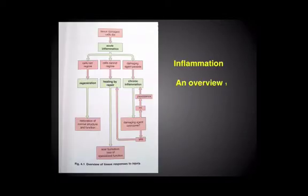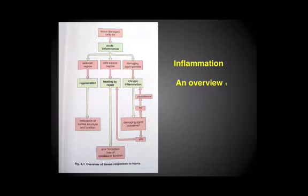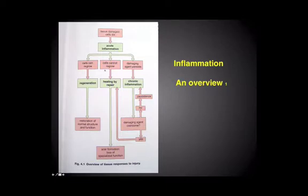This schematic shows, as a flow chart, some of the ways in which the inflammatory response can progress. Beginning with tissue damage and cell loss, the acute inflammatory response becomes established. On the left-hand side, if the background cell population can regrow, then once the damage is localised, tissues can regenerate. If cells can't regrow, repair occurs by a different mechanism, often involving scar tissue and fibrous tissue. Finally, if the damaging agent persists, you may move from acute to chronic inflammation.